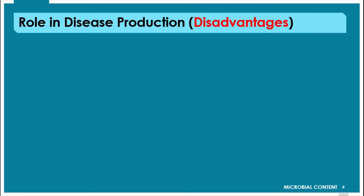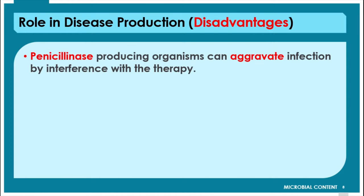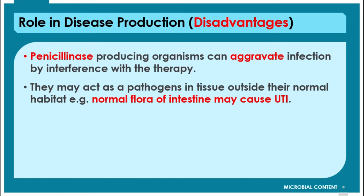Penicillinase-producing organisms can aggravate infection by interfering with therapy — these organisms destroy the antibiotic, increase in number, and ultimately interfere with treatment. Also, normal flora may act as pathogens in tissues outside their normal habitat. For example, E. coli is normally present in the intestine without causing harm, but if it enters the urinary tract, it causes urinary tract infection — E. coli is one of the major pathogens causing UTI.